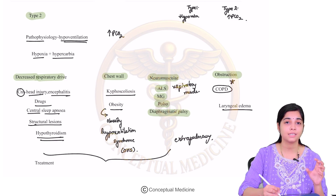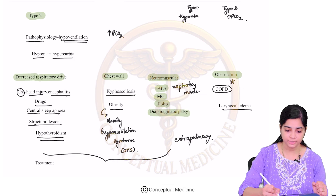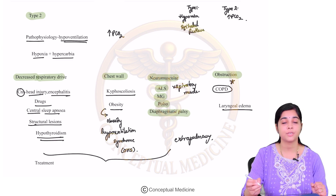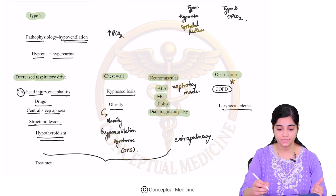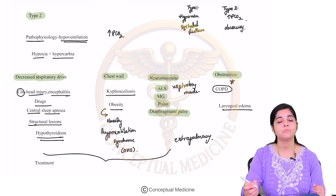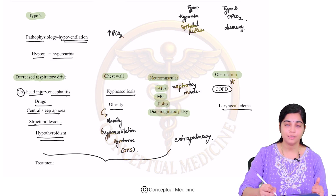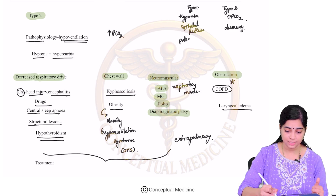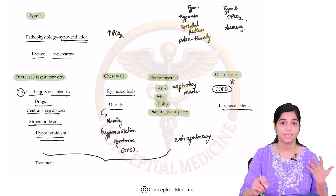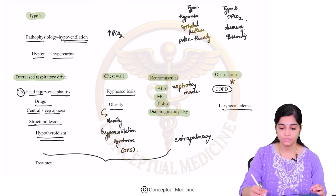In type 1, the patient has decreased oxygen saturation and appears agitated and restless. In type 2 respiratory failure, the patient is usually drowsy. In type 1 you will find a thready pulse, whereas in type 2 you find a bounding pulse.